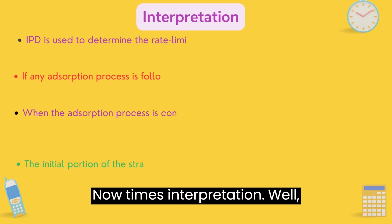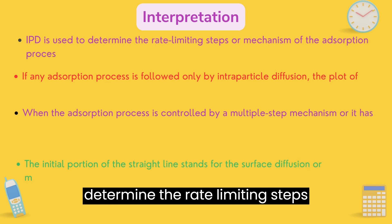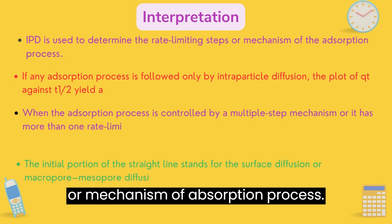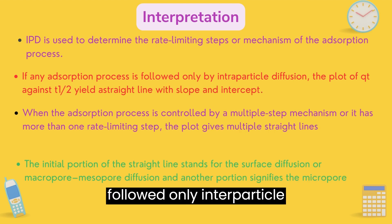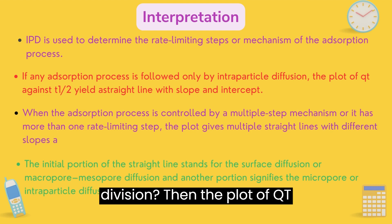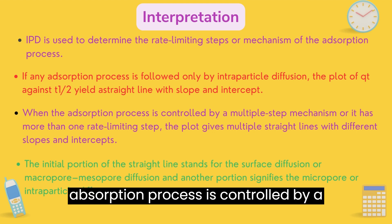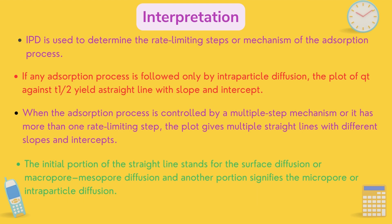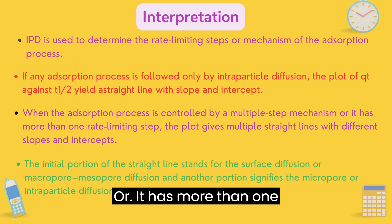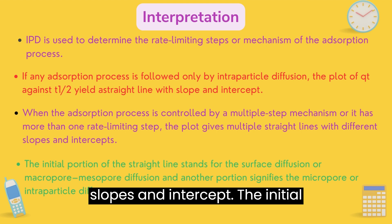Now comes interpretation. Intraparticle diffusion is used to determine the rate-limiting steps or mechanism of the adsorption process. If any adsorption process follows only intraparticle diffusion, then the plot of Qt against t to the power of half yields a straight line with a slope and intercept. When the adsorption process is controlled by a multiple-step mechanism or has more than one rate-limiting step, the plot gives multiple straight lines with different slopes and intercepts.